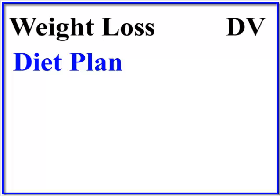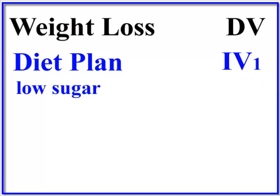Our first independent variable is going to be diet plan. And remember, because this is an ANOVA, our IVs always have to be categorical variables, nominal variables — something that puts the subjects into specific groups. So our first IV is diet plan, we'll label it IV1. It has three levels: a third of the people are on a low-sugar diet, a third on a low-fat diet, and a third on the Atkins diet. So that is IV number one.